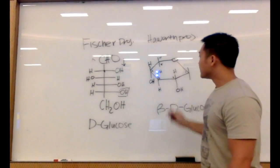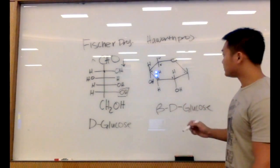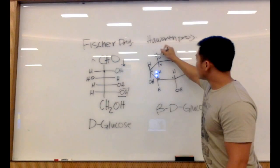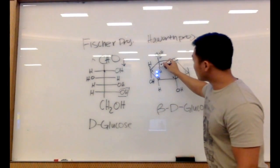For my fifth and sixth carbon, this determines if it's going to be D-sugar or L-sugar. D-sugars, the CH2OH group will be going up and my hydroxy group will be going down.